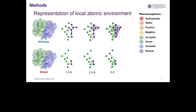To better capture the interaction patterns at the protein-protein interface, I used a special representation of the local atomic environment. Within a 10 Ångström distance from the mutation site, each atom is modeled as a node labeled with one of eight pharmacophores. A scanning algorithm draws edges between atoms starting from a minimum of 1.5 Ångströms, gradually increasing by 0.5 Ångströms up to 10 Ångströms. Solid lines indicate interactions within the protein where the mutation occurs; dashed lines indicate interactions between the two proteins.